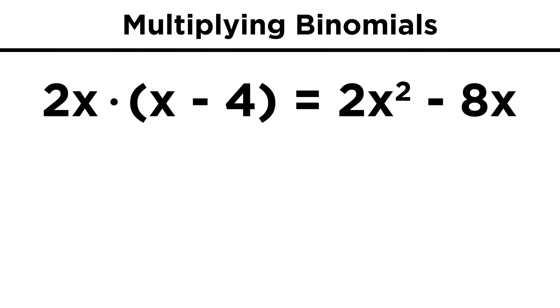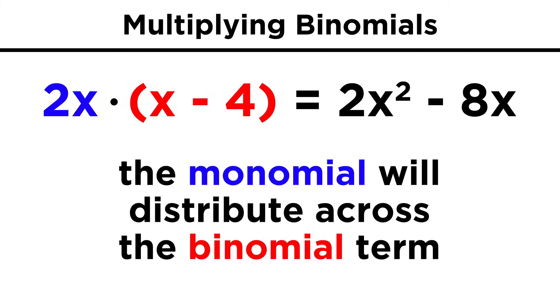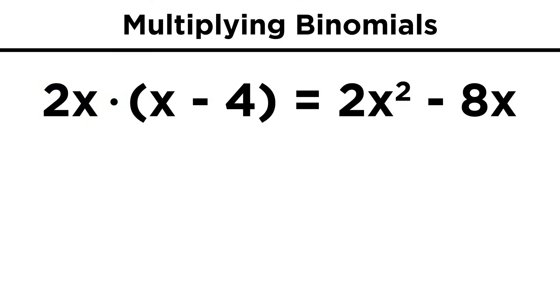Now we have to look at binomials. These are expressions with two terms. If we have a monomial times a binomial, again this is very simple, because we just apply the distributive property. Looking at two x times the quantity x minus four, we just multiply across, so we get two x squared minus eight x.